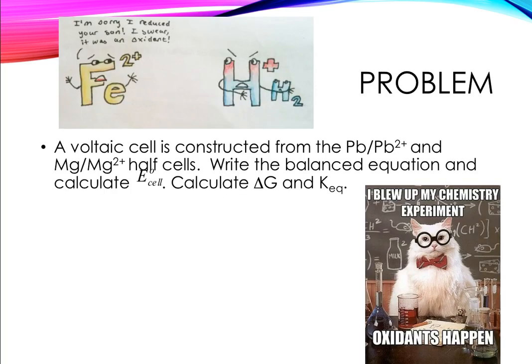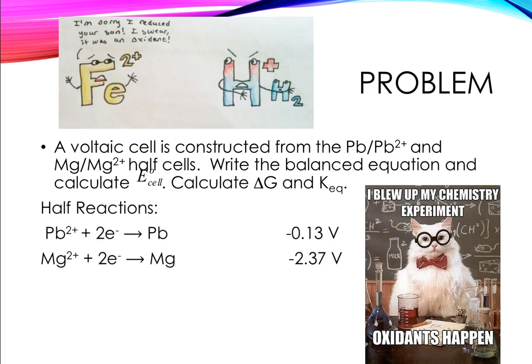So let's do a problem. A voltaic cell is constructed from a lead/lead²⁺ half cell and from a magnesium/magnesium ion half cell. We want to write the balanced equation, calculate E cell, and from that we can get delta G and the equilibrium constant. This is a really comprehensive problem. For our half reactions, you need to have your standard reduction potential sheet — this is something you would have access to or be given the half reactions.